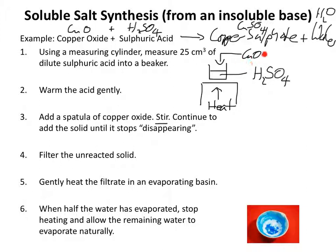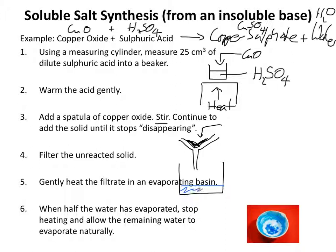What we'll be left with is a solution of copper sulphate and some sludgy black copper oxide on the bottom of the beaker. We don't want the excess copper oxide, so we filter it using a filter funnel with a piece of filter paper. The copper oxide sludge builds up on the filter paper, and the copper sulphate solution comes through. It's probably best to filter it straight into an evaporating basin.